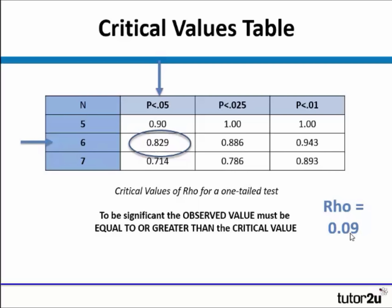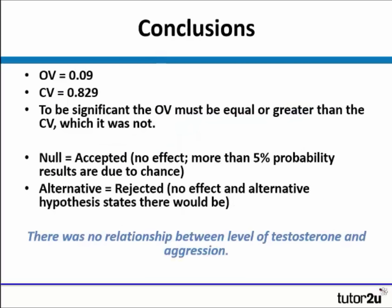Our calculated value was 0.09, and if we look at n equals 6 at p = 0.05 — meaning the probability of our results being due to chance is less than or equal to 5% — the critical value is 0.829. The critical value is much bigger than ours, so we have not found an effect. To be significant, our observed value must be equal to or greater than the critical value, which it was not. Therefore, we accept our null hypothesis, because we found no effect and there is more than a 5% probability that our results are due to chance. The alternative hypothesis is rejected because there was no effect. So overall, there was no relationship between levels of testosterone and aggression.